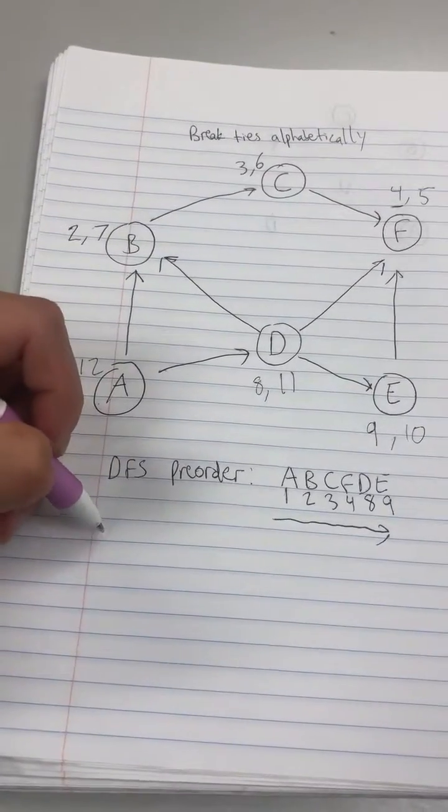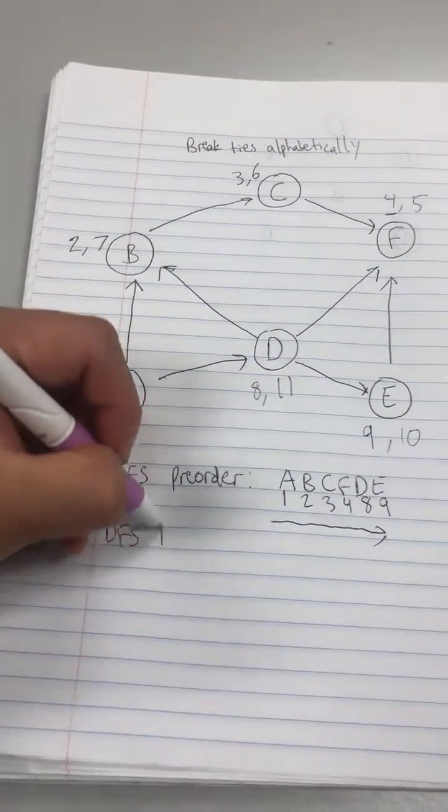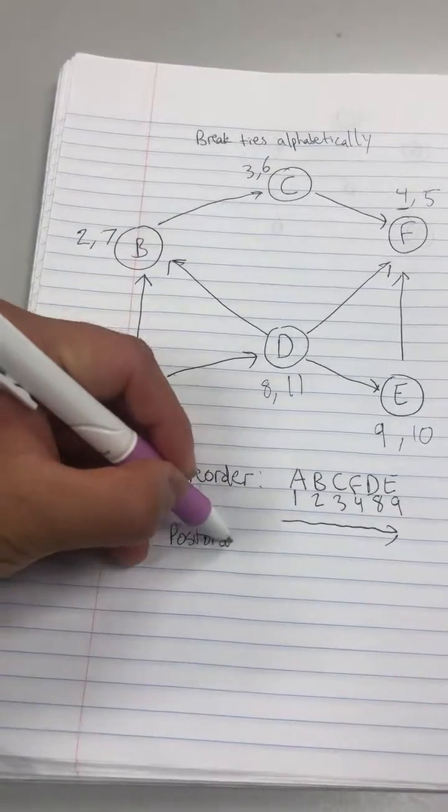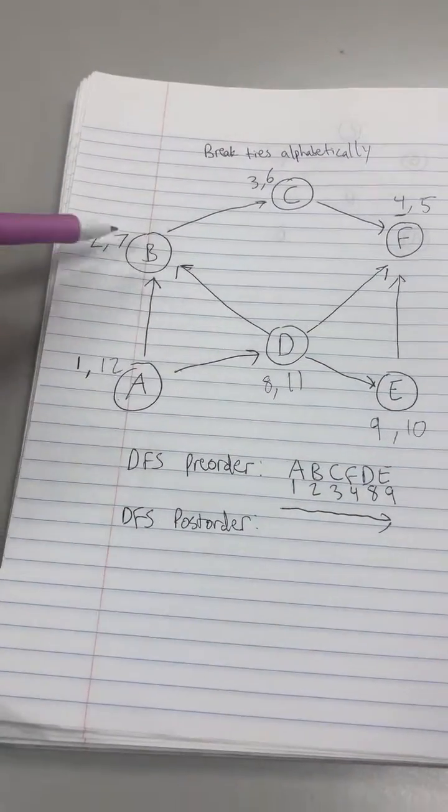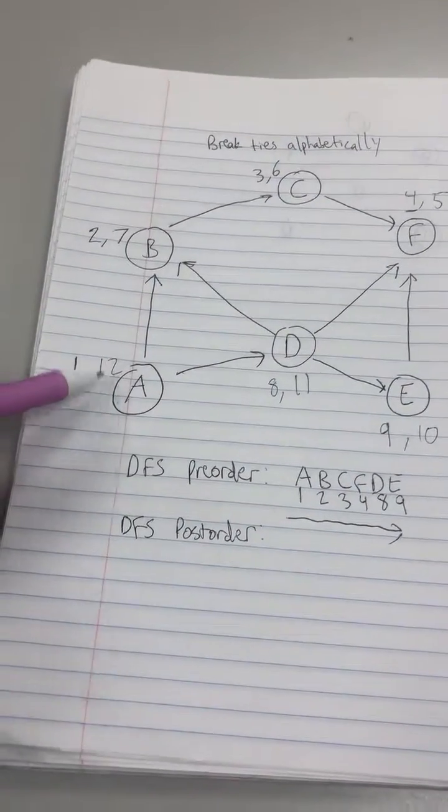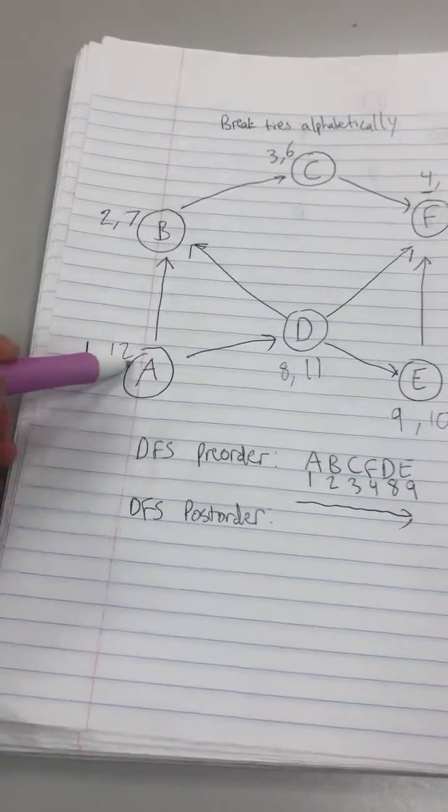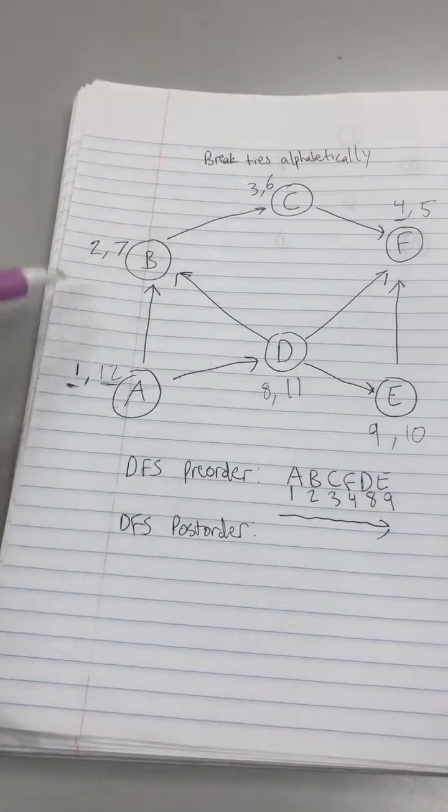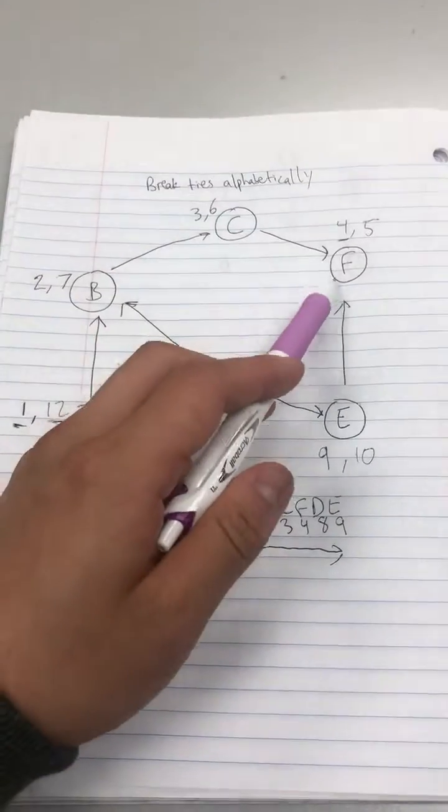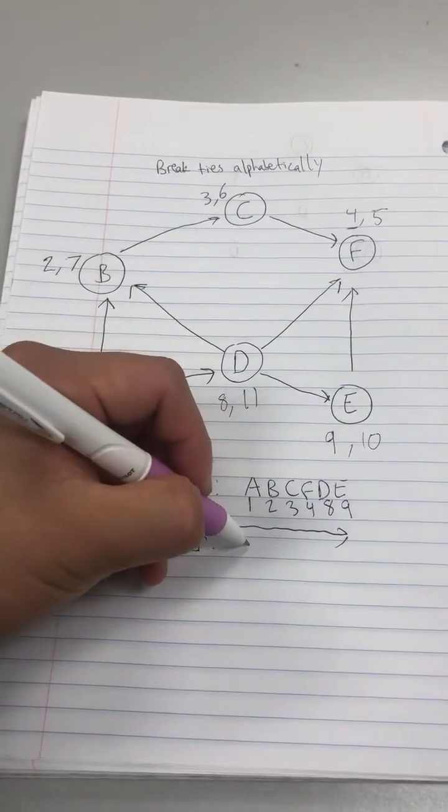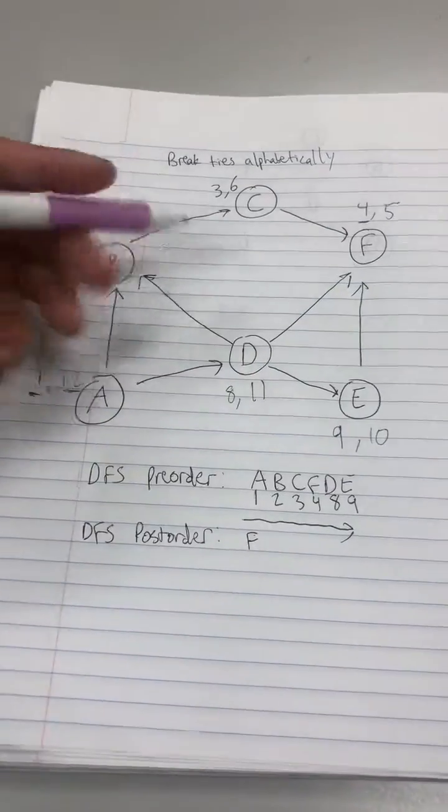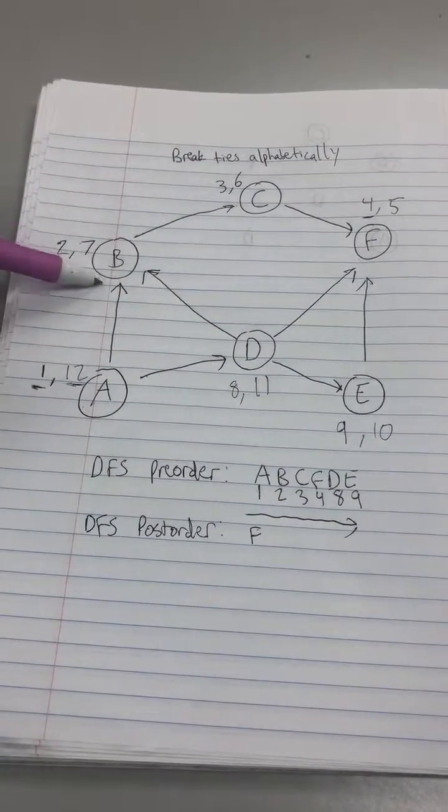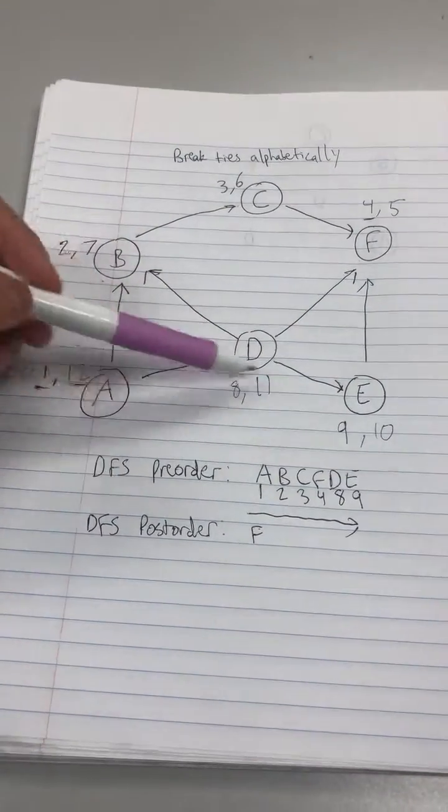So for the DFS post-order we're essentially going to do the same thing except we're looking at the second number this time in the ordered pair. For preorder we looked at this one. Now we're going to look at this one. So from smallest to largest it seems like it starts at F, goes to C, B, E, D, A.